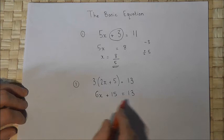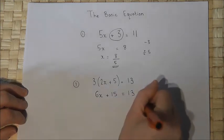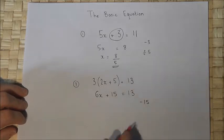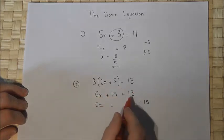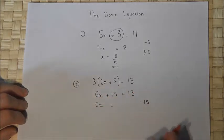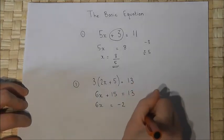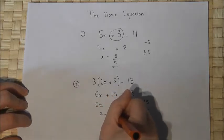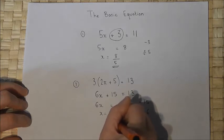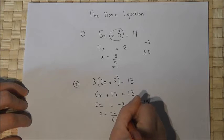We're now back to the basic equation. There's a plus 15, so if I take away 15 from both sides the plus 15 cancels off. So 6x equals 13 take 15 which is minus 2. Then to find x I divide by the coefficient of x, which is 6, so x equals minus 2 over 6, which cancels down to minus 1 third.